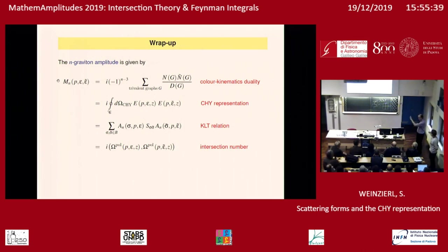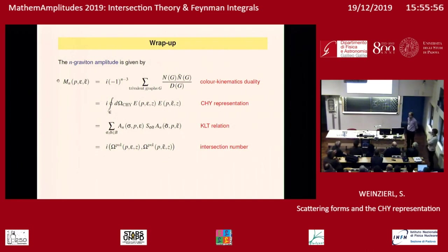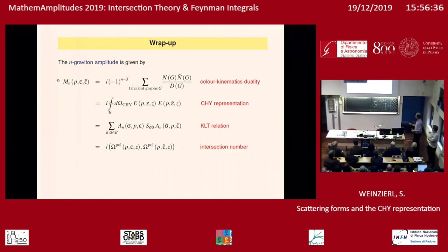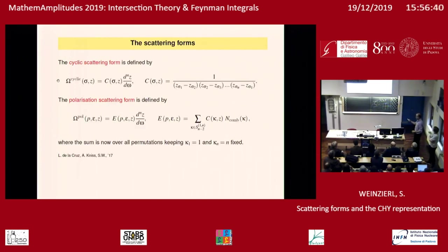Question about extension to other theories: Is there an extension to fermions, massive particles, etc.? The speaker says BCJ relations for massive and massless quarks have been worked out. For the intersection number framework with fermions, you would need to define a new form since fermions have spin one-half, and this has not yet been done.